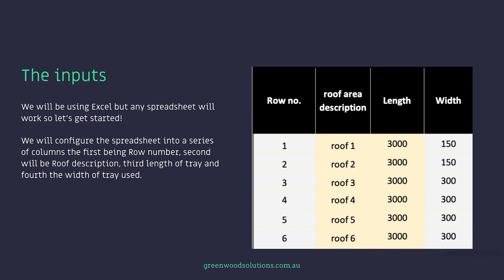We'll configure the spreadsheet into a series of columns. The first one being row number. The second will be the roof description. Third, length of the tray used. And fourth, the width of the tray used — so 150, 300, 450 mil or 600.